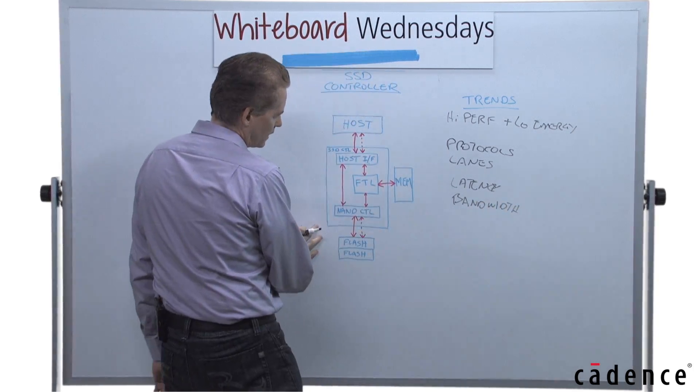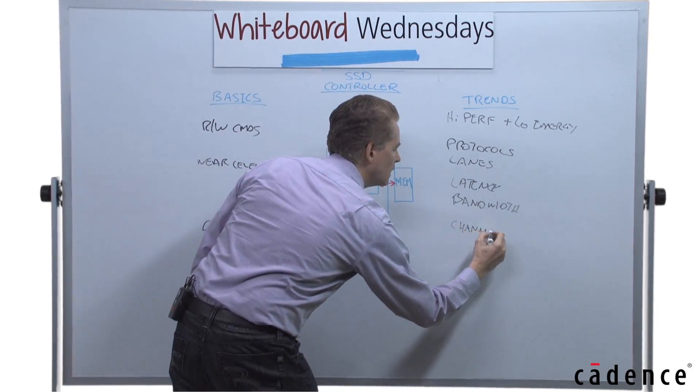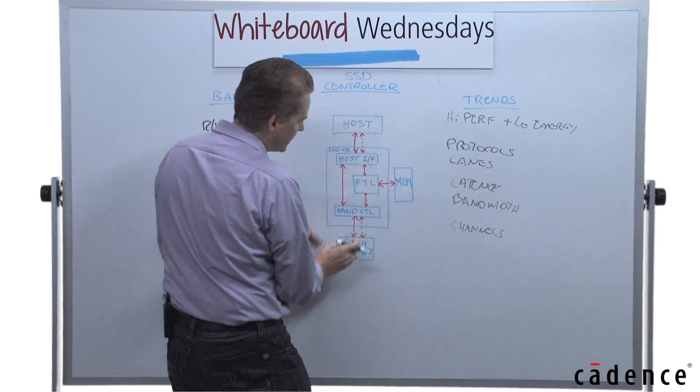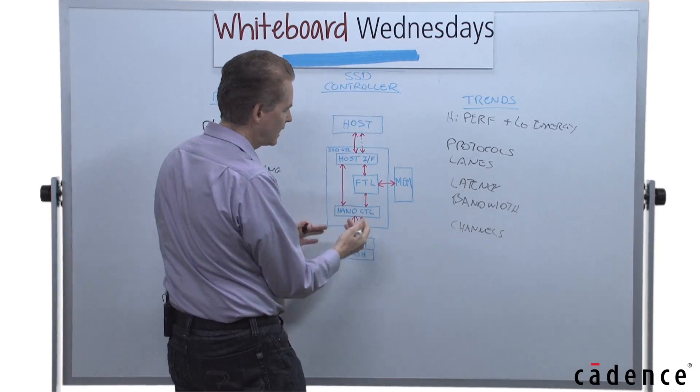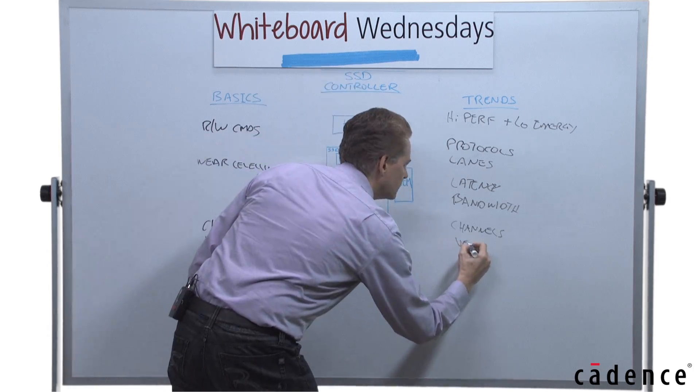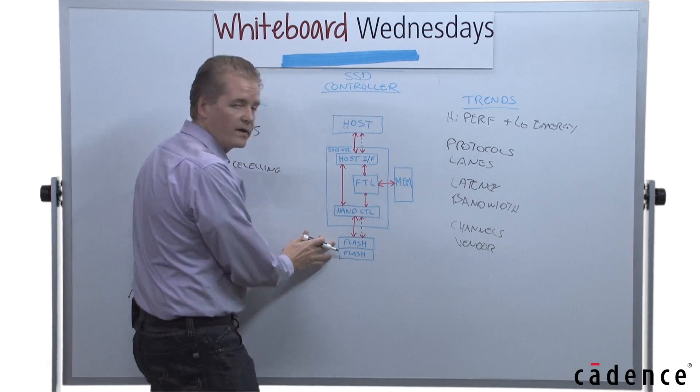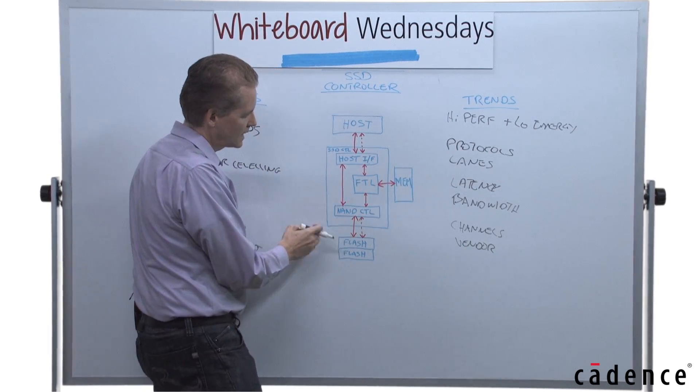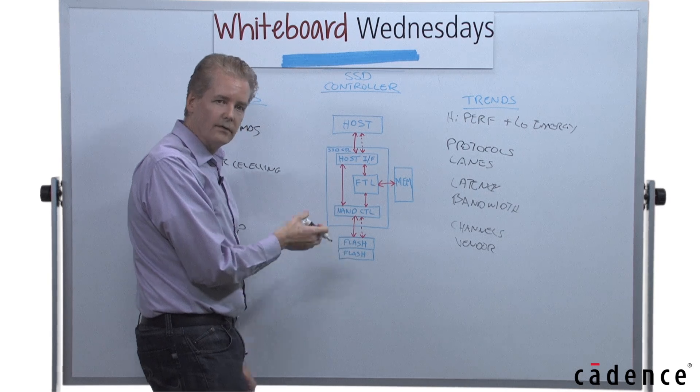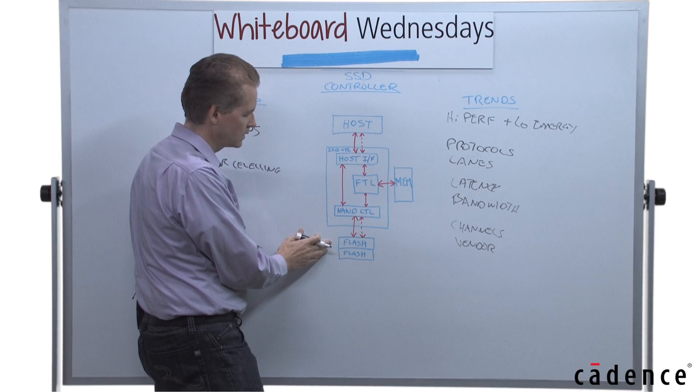On the NAND control side, this is having to deal with adding multiple channels—adding multiple paths to the flash to get a high level of parallelism and data throughput. But in addition, it's having to deal with differences between vendors. The flash vendors have slightly different characteristics, so the NAND control has to deal with these differences to make best use of the flash and make it last as long as possible.